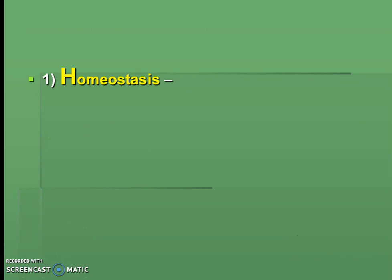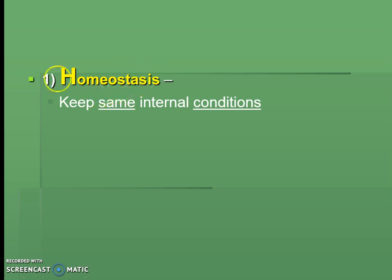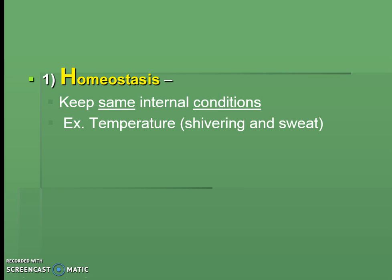HOGRACE starts with H, and this is the weirdest one, so let's get it out of the way first. It's called homeostasis. Let's break it down: it means keeping the same internal conditions inside the body. The example to help remember it is temperature — if we change the temperature outside our body, it might cause us to shiver or sweat.